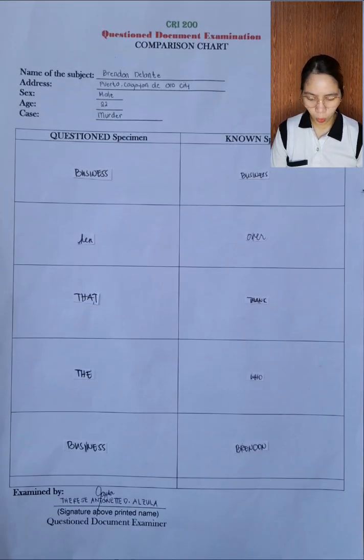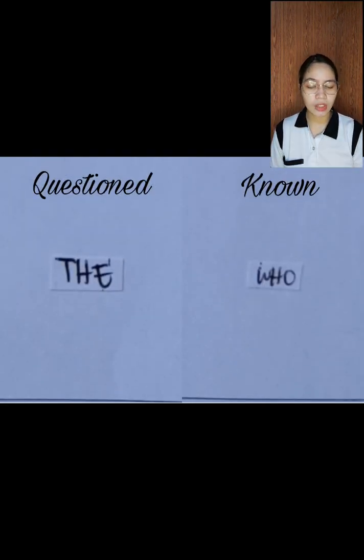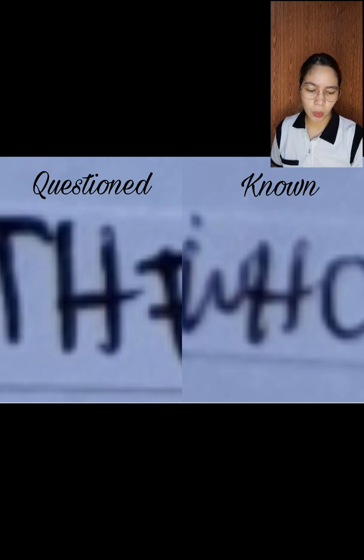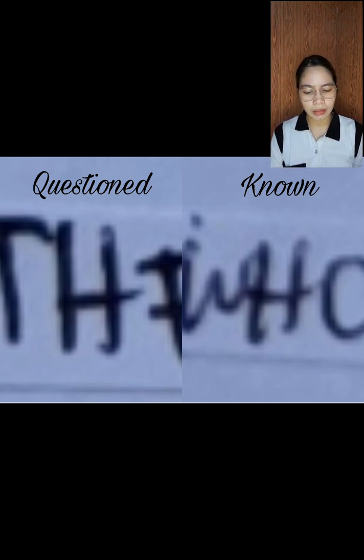For the fourth specimen, the questioned document has the word 'the' and the known specimen has the word 'who.' We focus on the letter H and the way he wrote it. You will notice there is a hitch — an introductory backward stroke added to the beginning or ending of capital or small letters. The way he wrote his capital letter H, there is a hitch on the bottom part.